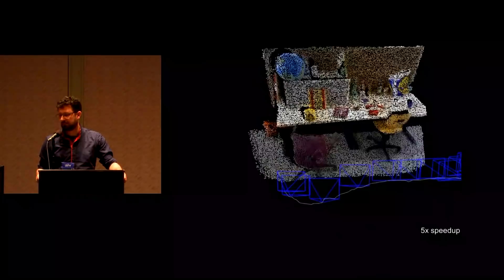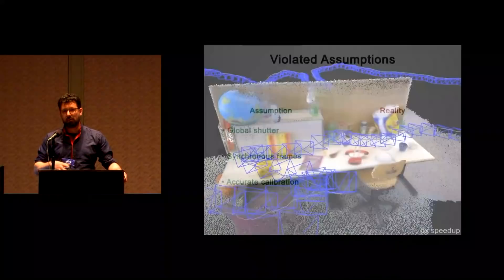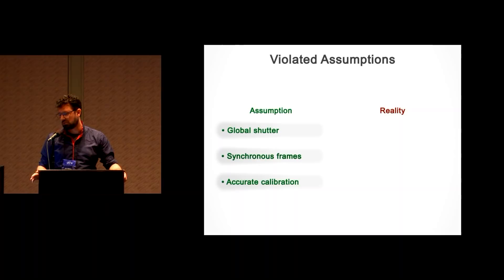Here's our method on one of the TUM RGBD datasets, where you can see that we are able to faithfully reconstruct the geometry of the scene and the trajectory of the camera. However, if you look at numbers, you will actually notice that our method, just as all other direct Slam systems, performs worse than feature-based ORB Slam 2. The reason is that all of those methods make a couple of assumptions that are violated, but this seems to hurt direct methods much more.